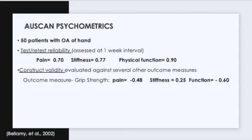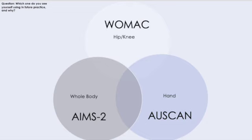For the OSCAN psychometrics, there was a study done with 50 patients with osteoarthritis of the hand, and it was found to be both valid and reliable, as shown with the numbers on the screen. To compare and contrast the three indexes: they're all osteoarthritis indexes and patient-reported outcomes, so that's something they all have in common.